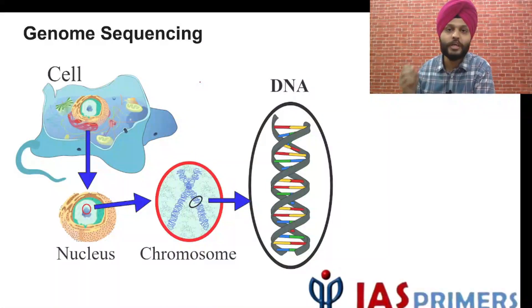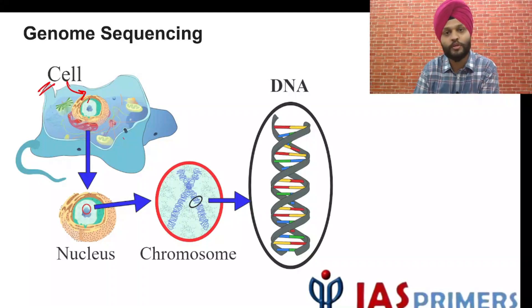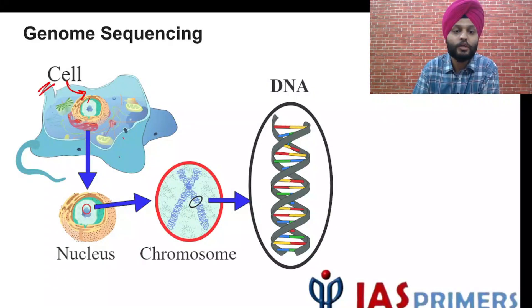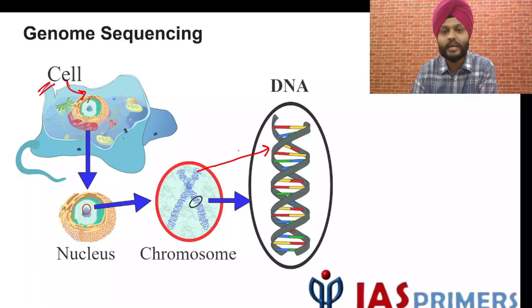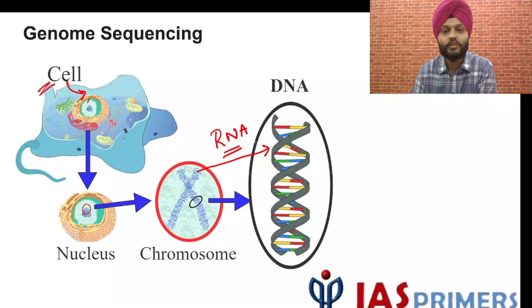So in genome sequencing — as I said, all living beings have a genome. All cells have a nucleus, which is like a brain, and this nucleus has the genetic material we call the genome. The nucleus has something known as a chromosome, and from this chromosome we get the DNA. In the case of the virus, we get the RNA — this is an RNA-based virus.